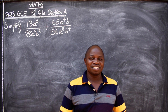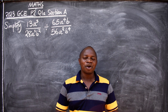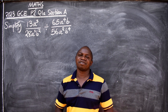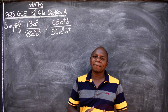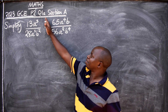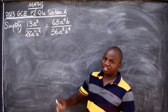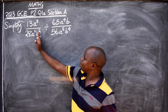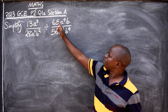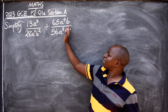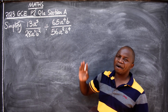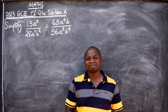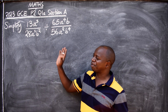Hello dear friends, this is Mr. Kalunga. In this lesson we want to look at this question on the board. This is mathematics — the question is coming from the 2023 GCE Paper 2, Question 1a, Section A. The question says: simplify 13a³ divided by 28a²b², divided by 65a⁴b divided by 56a²b⁴. Let's identify the topic: algebra. And we are told to simplify.